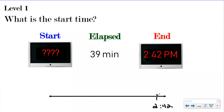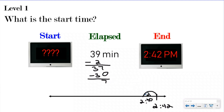When subtracting, I like to go to my next friendly number first — by friendly number I mean multiples of 10, basically numbers that end in zero. So I'm going to take 2 minutes from my elapsed time, which leaves me with 37 minutes left, and I write down my time as 2:40. Now I can take a big chunk because 40 minus 30 is easy to do in my head. So I'm going to make a big hill of 30 minutes. Going back 30 minutes, 40 minus 30 leaves me at 2:10.